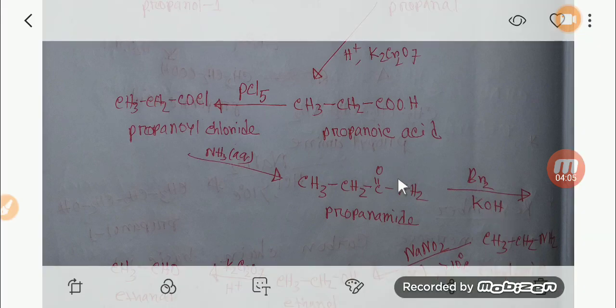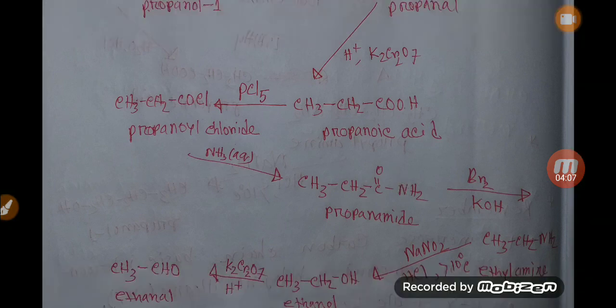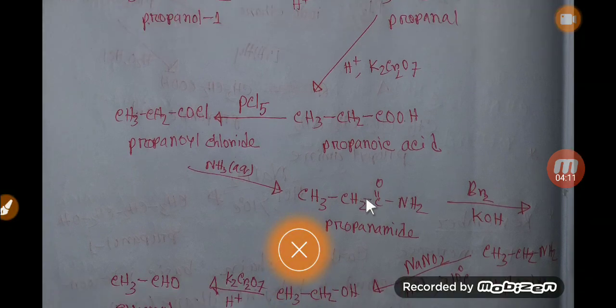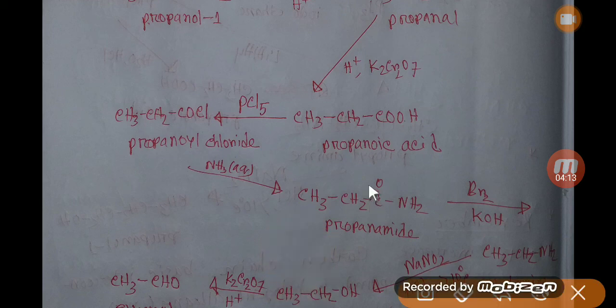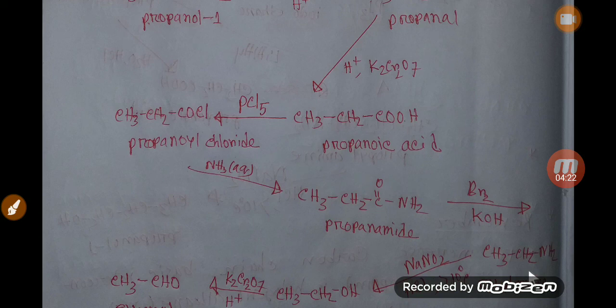Then, you will see this carbonyl group will go away, and you will get this compound. This is ethylamine - CH3-CH2-NH2. This is ethylamine.